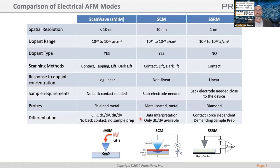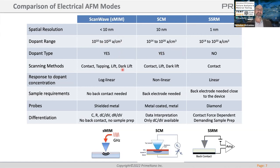I'd like to compare the different electrical modes for AFM: ScanWave sMIM, scanning capacitance, and spreading resistance measurements. Spreading resistance has the highest spatial resolution, but sMIM actually has the highest range of dopants it can detect — sensitivity going down to intrinsic silicon for dopant variations. We can identify the dopant type. These measurements can run in contact mode, tapping mode, lift mode, or dark lift mode.